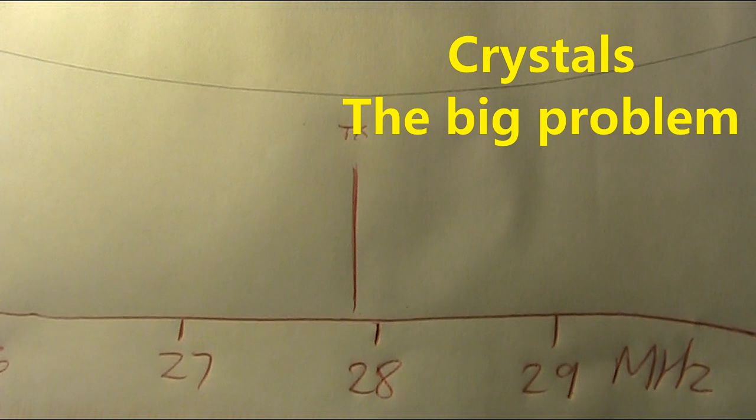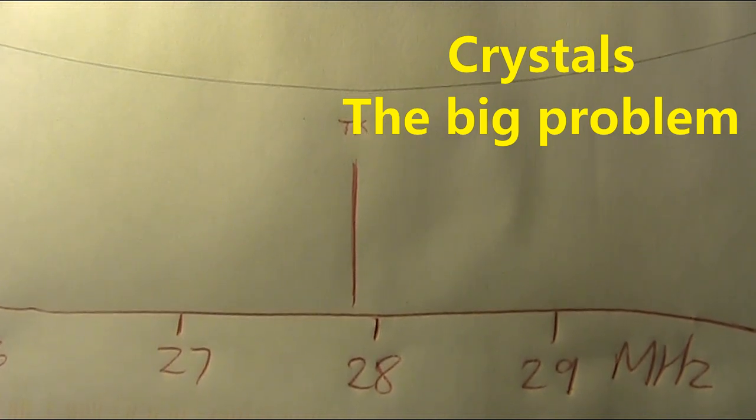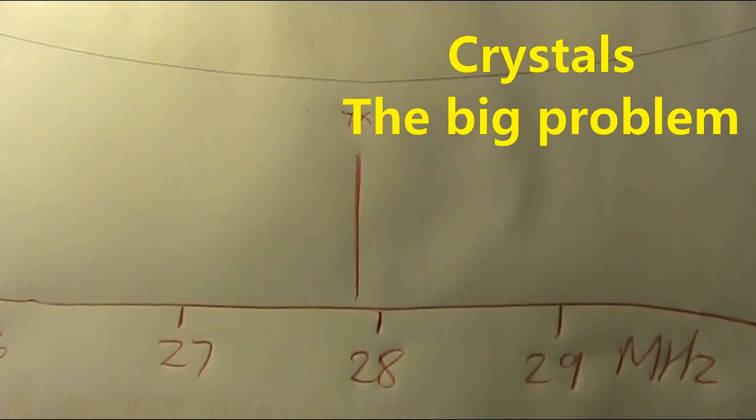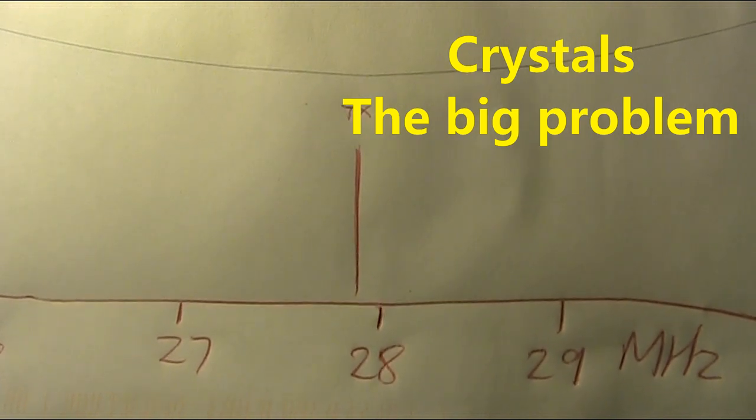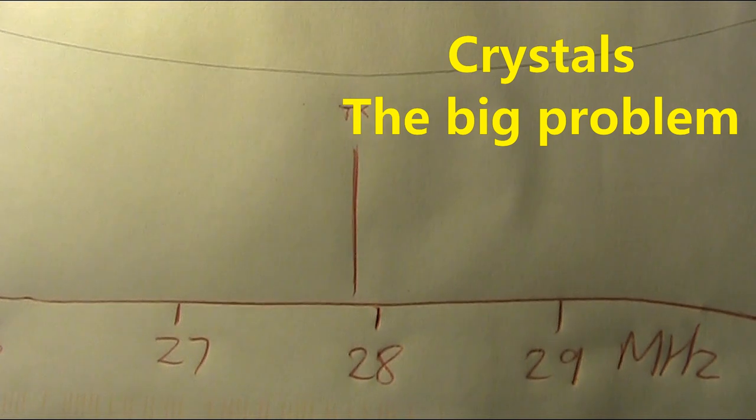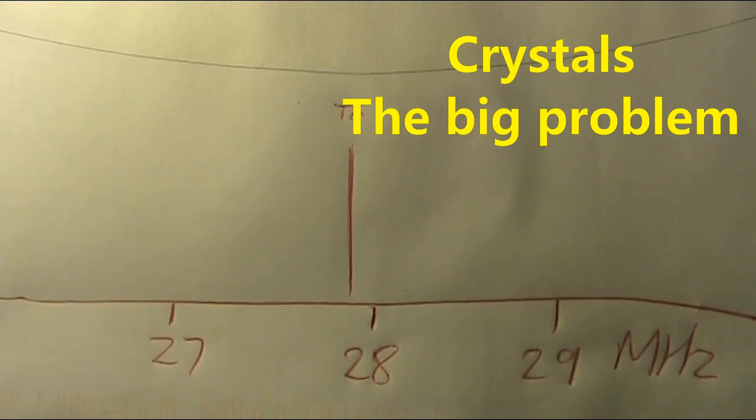Assuming you've got suitable radios, and they can be the earlier type of mobile that were crystal controlled as well as the handheld that you just saw. The next problem, and this is probably the biggest problem, is finding the right crystals.